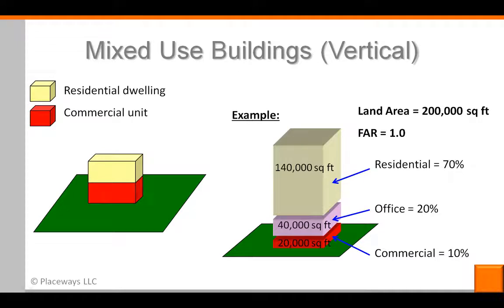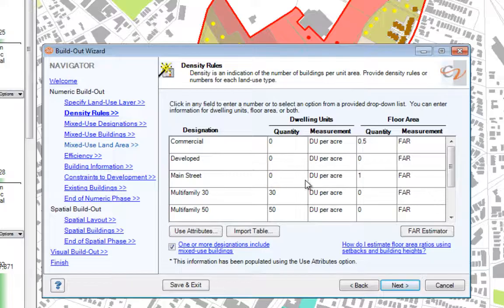To accommodate this, I need to make sure that any use where we will have mixed-use buildings has a quantity specified under floor area. Dwelling unit quantities are not necessary for vertical mixed-use. Here, the Main Street use will be our focus, and we've entered an FAR of 1.0.